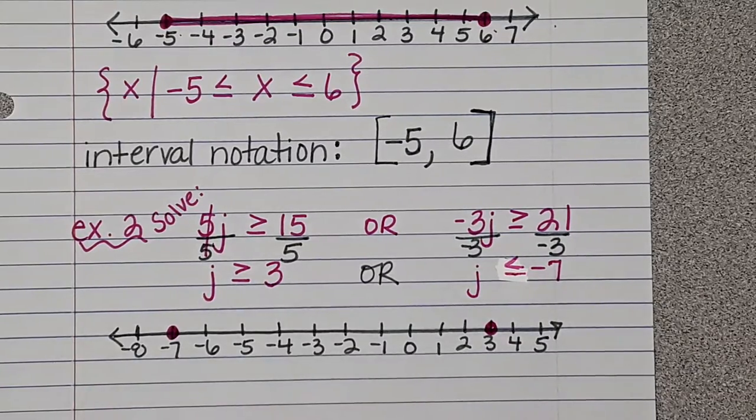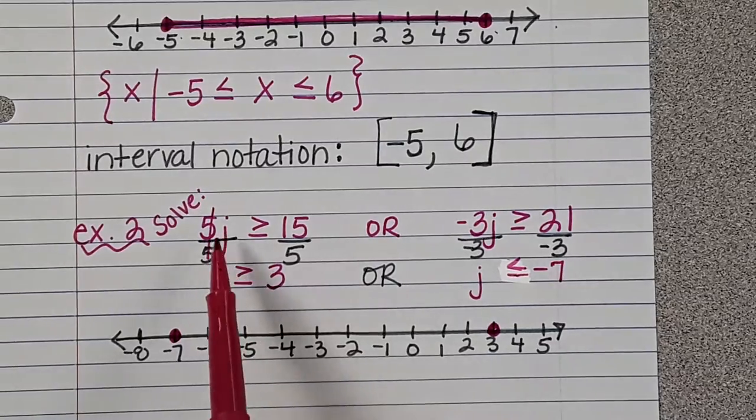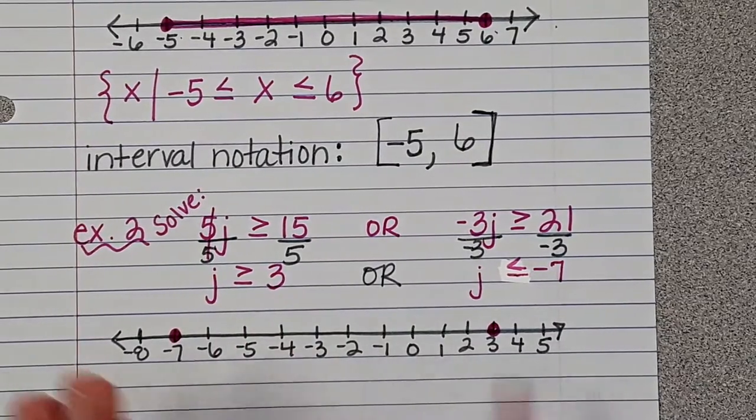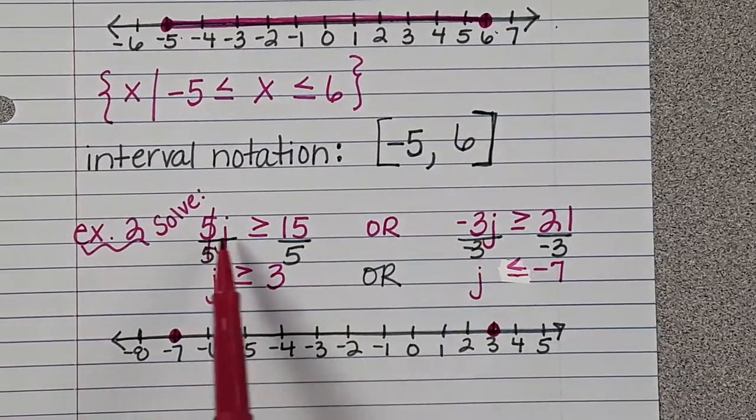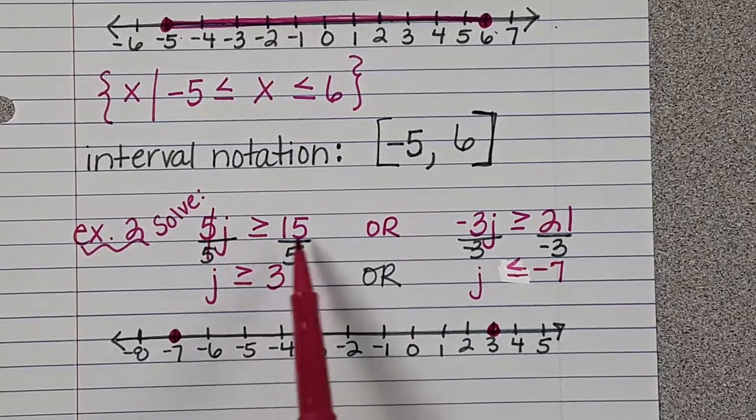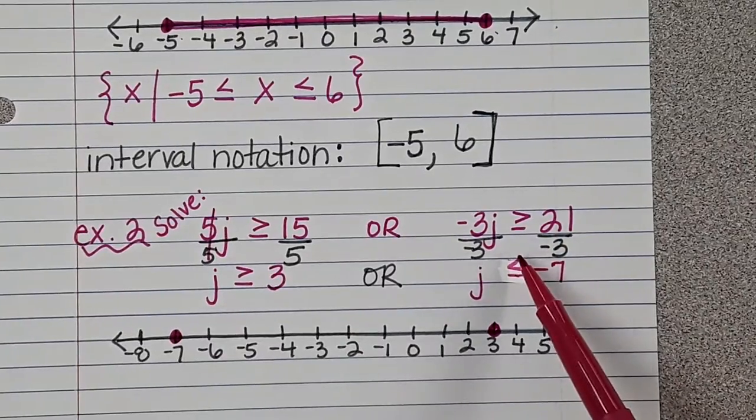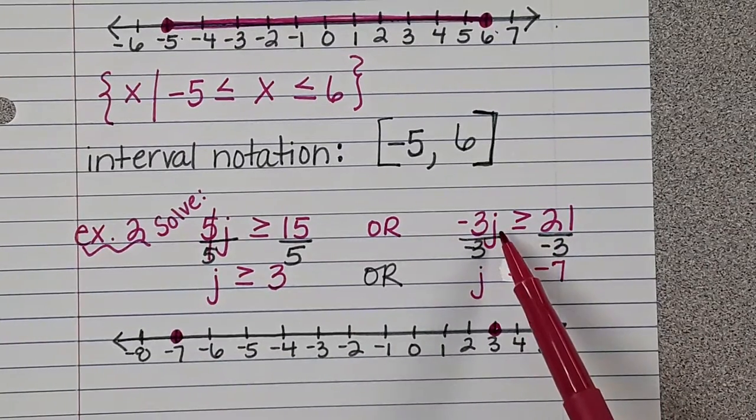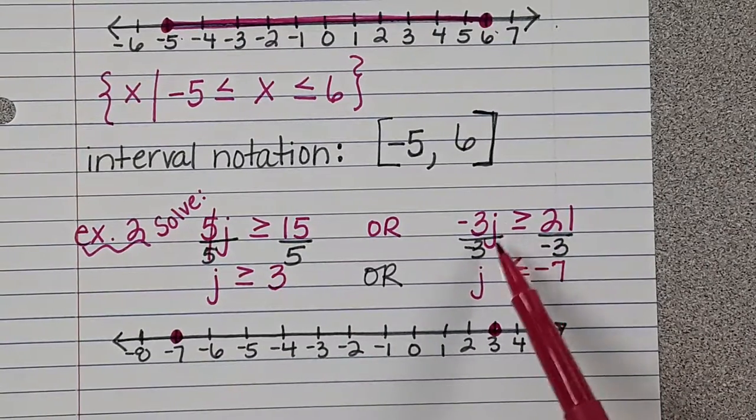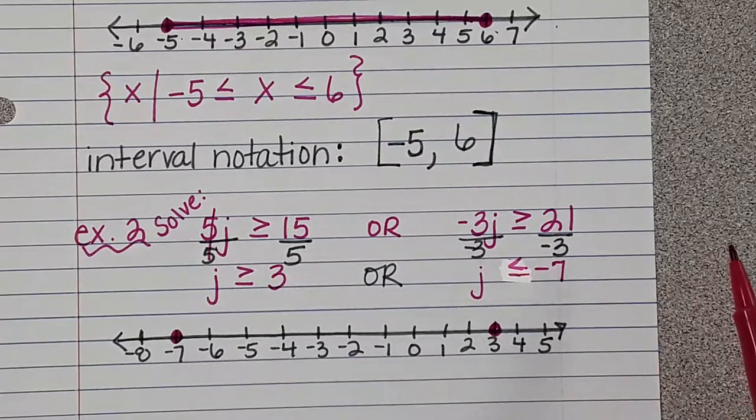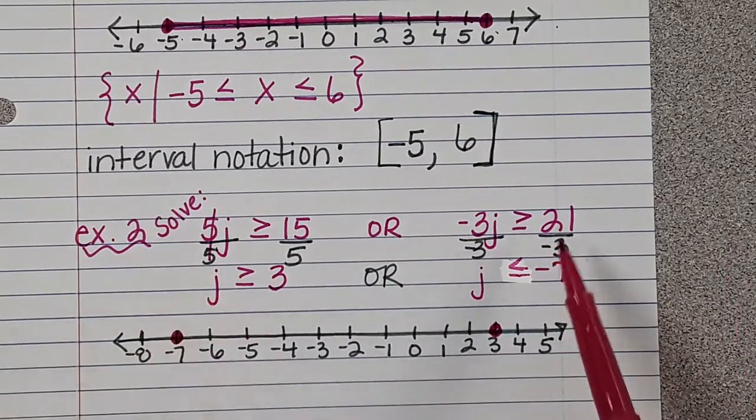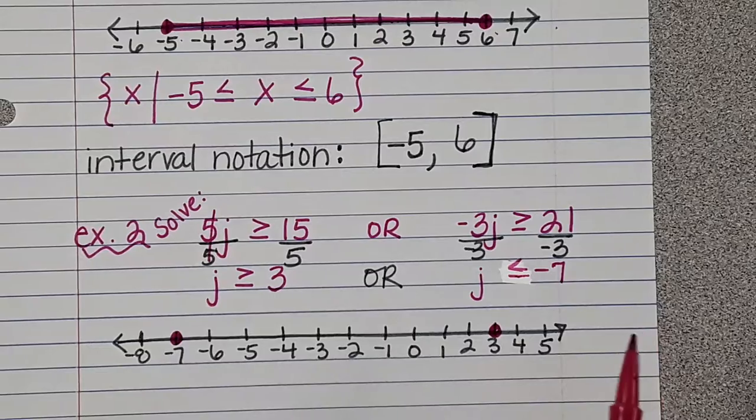I'm going to plug in zero. What is five times zero for this? I'm going to show you why it doesn't work. What is five times zero? Zero. Is zero greater than 15? No. So that's false. I'm going to plug in zero for this side. What is negative three times zero? Zero. Is zero greater than negative 21? So they're both false, so I can't shade in between.